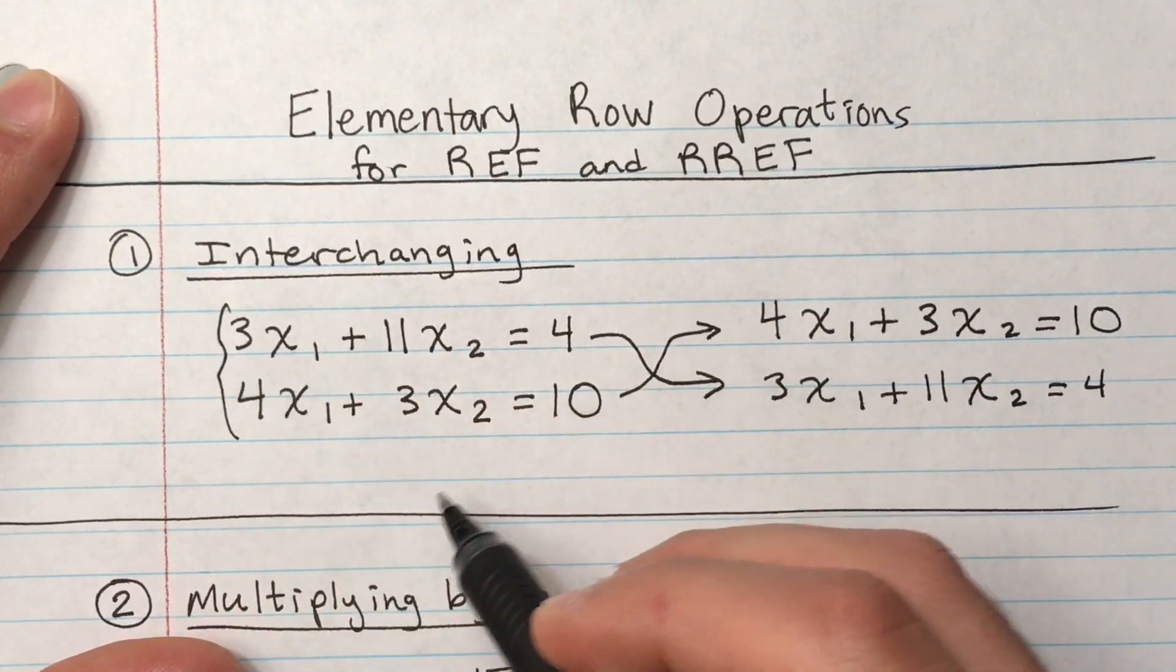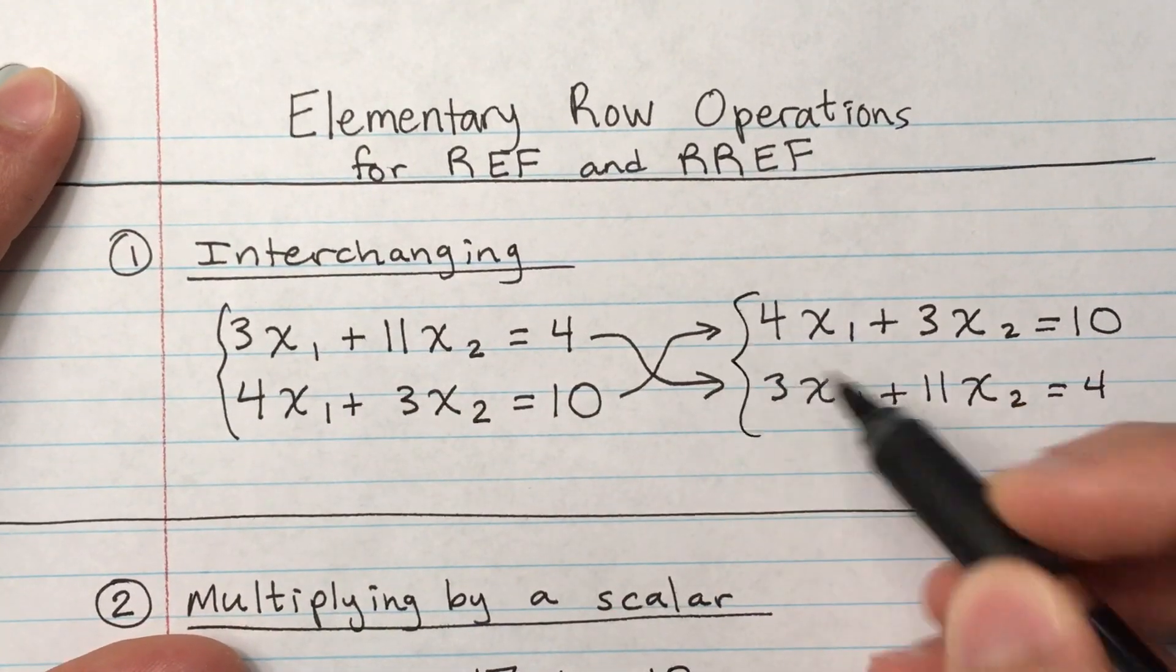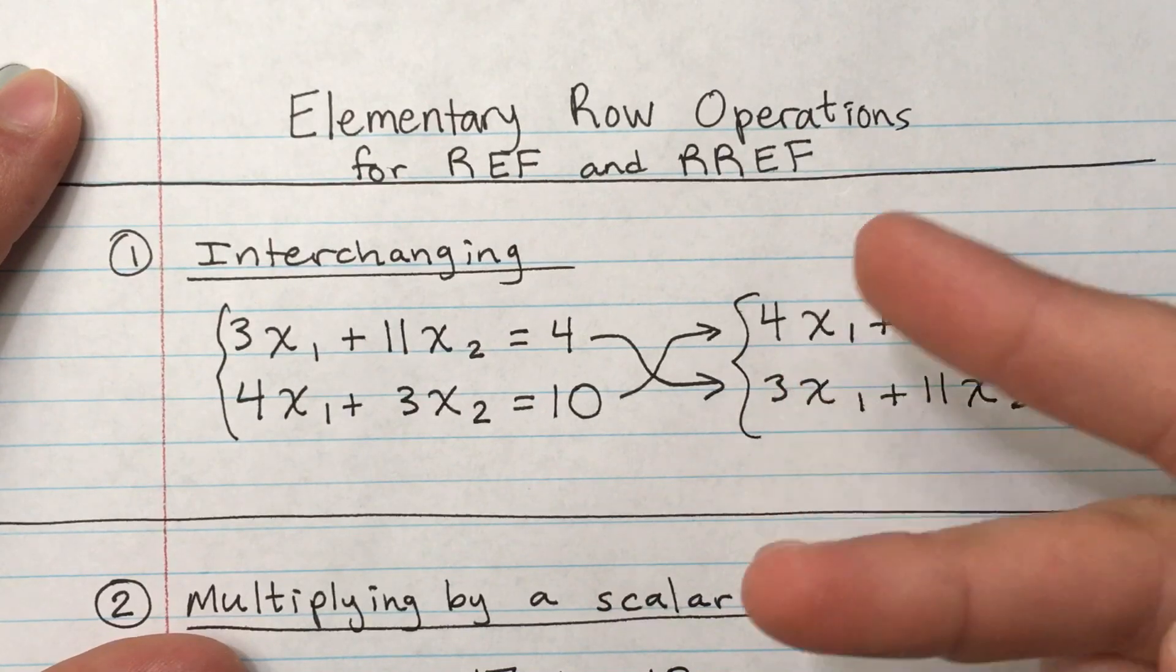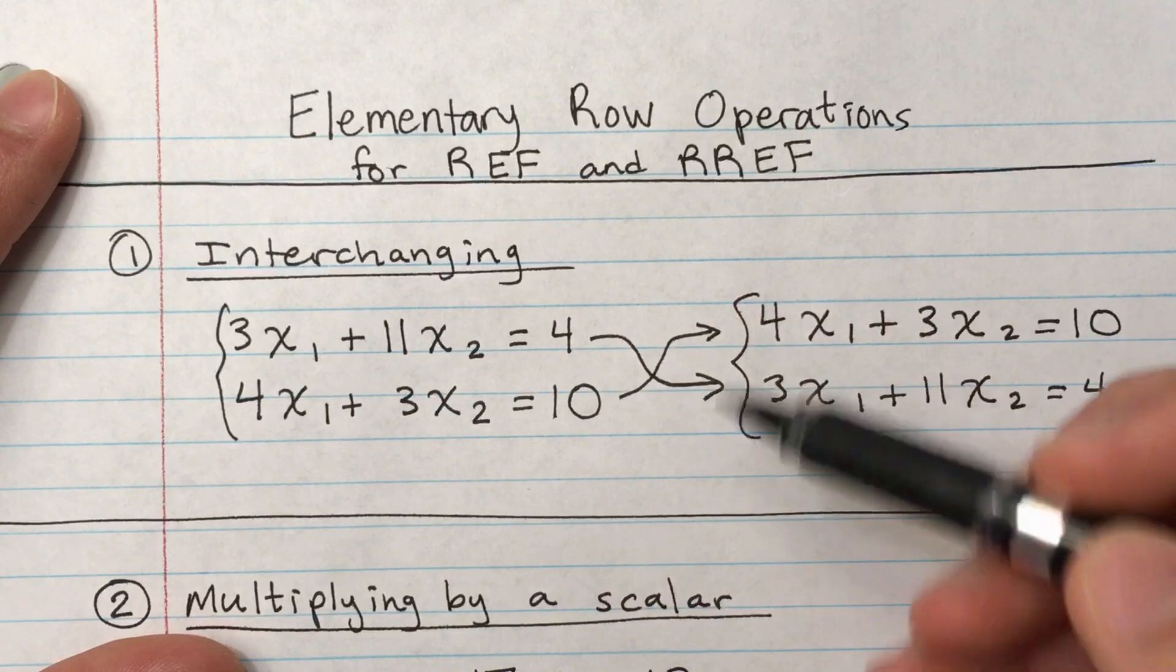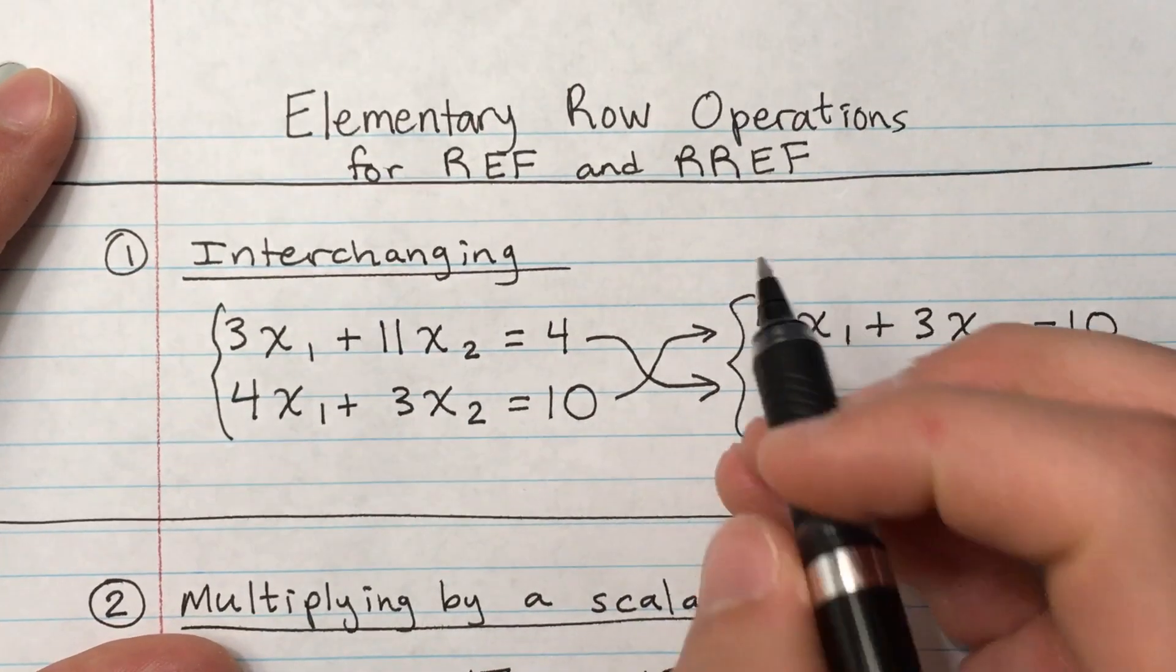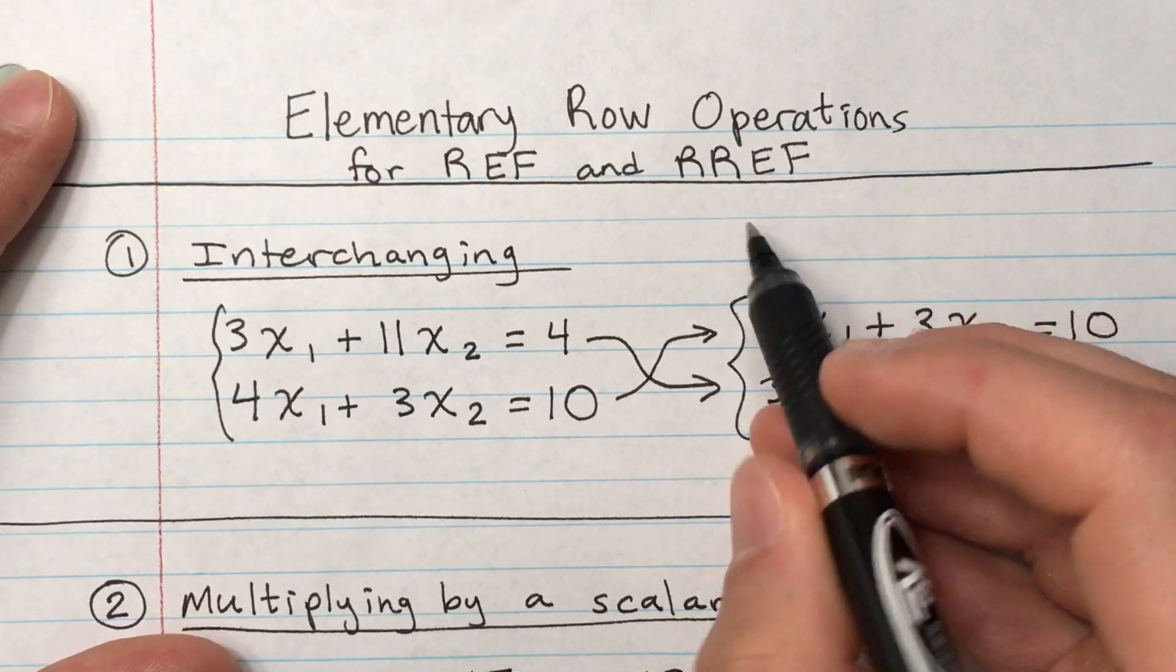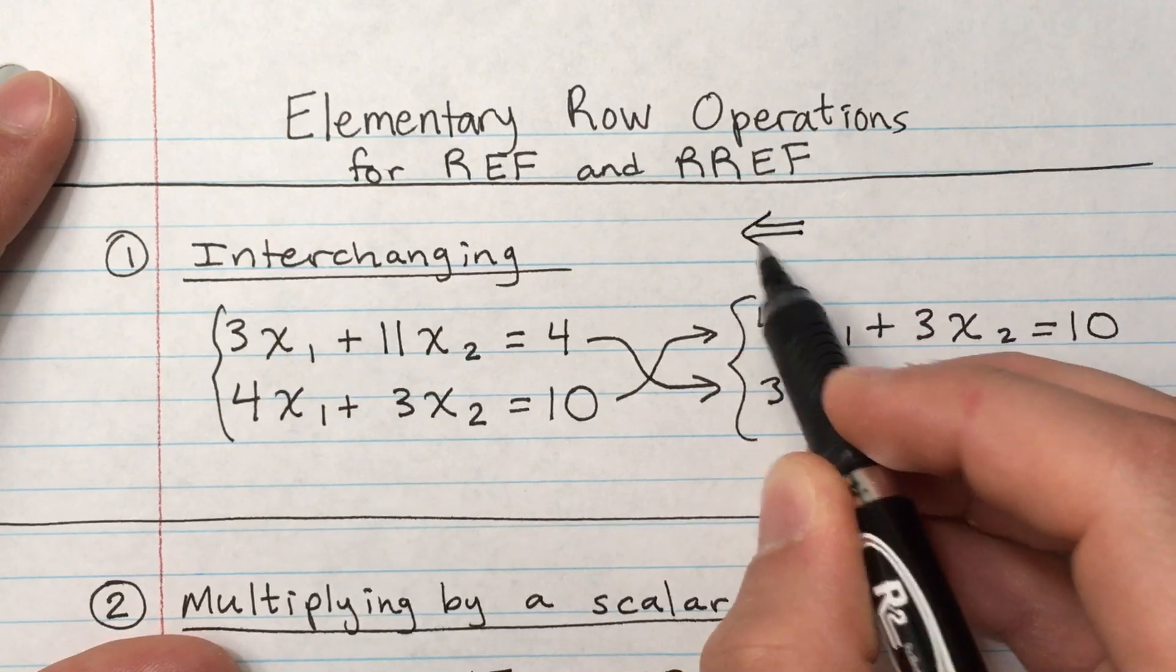So if this is a system right here and our new system is pretty much switching the replacement of wherever they were at, that would be an equivalent system. And the way we know equivalent, the symbol of equivalence would be this two-way arrow.